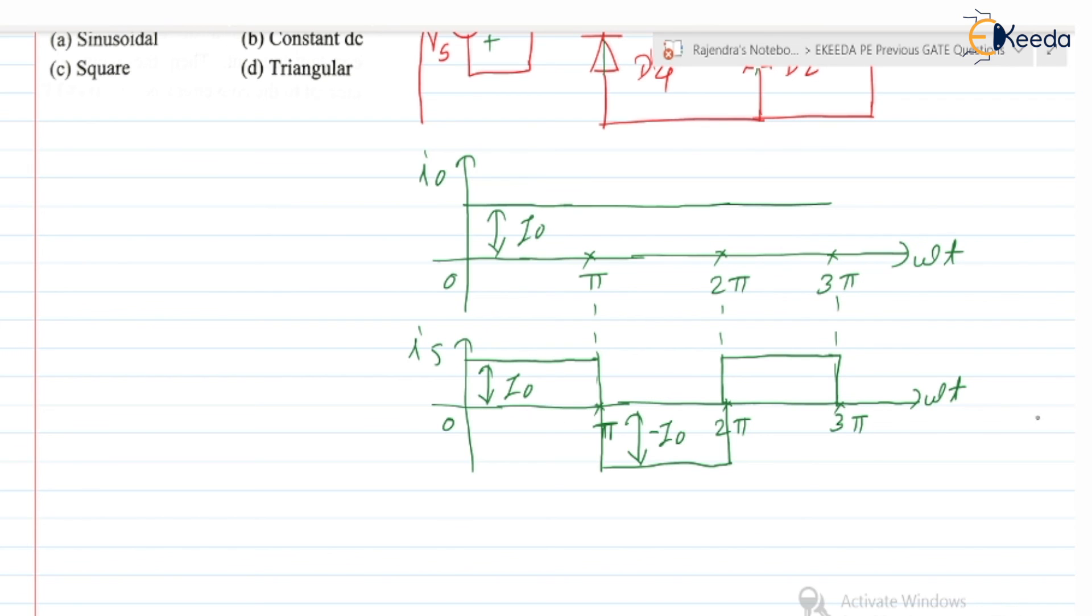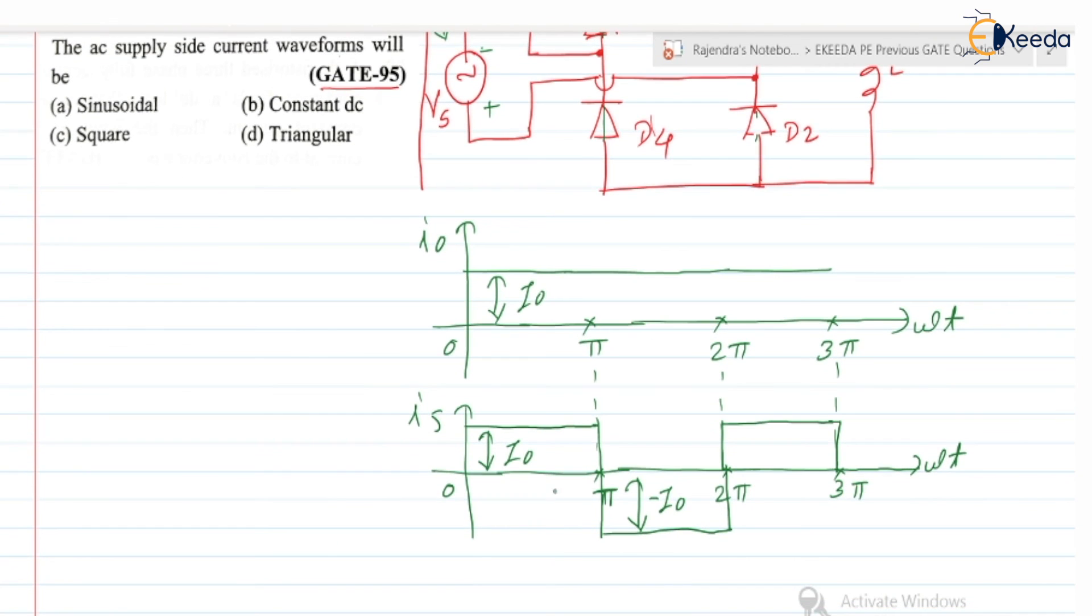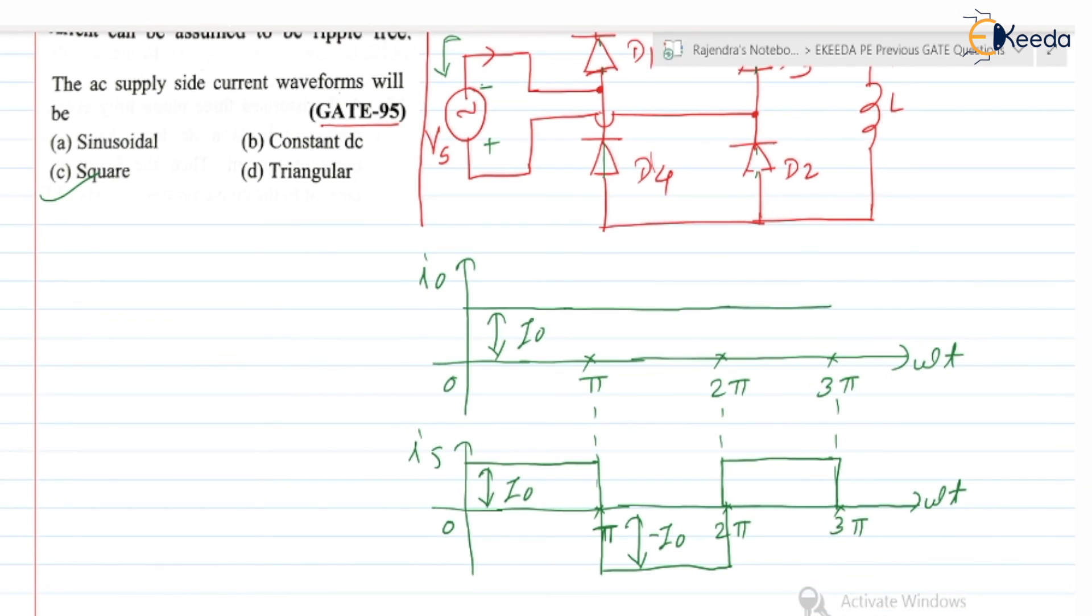So if you check the Is waveform, yes, it is a square wave. Is is a square wave. So the nature of the AC supply side current waveform, it will be a square wave. So correct option is option C. Is this clear?